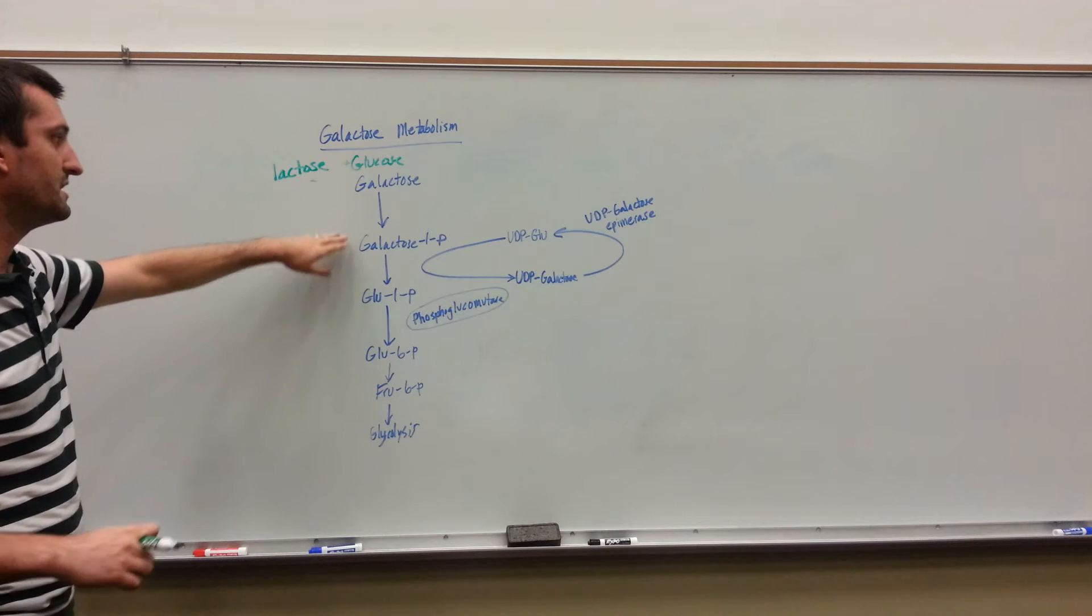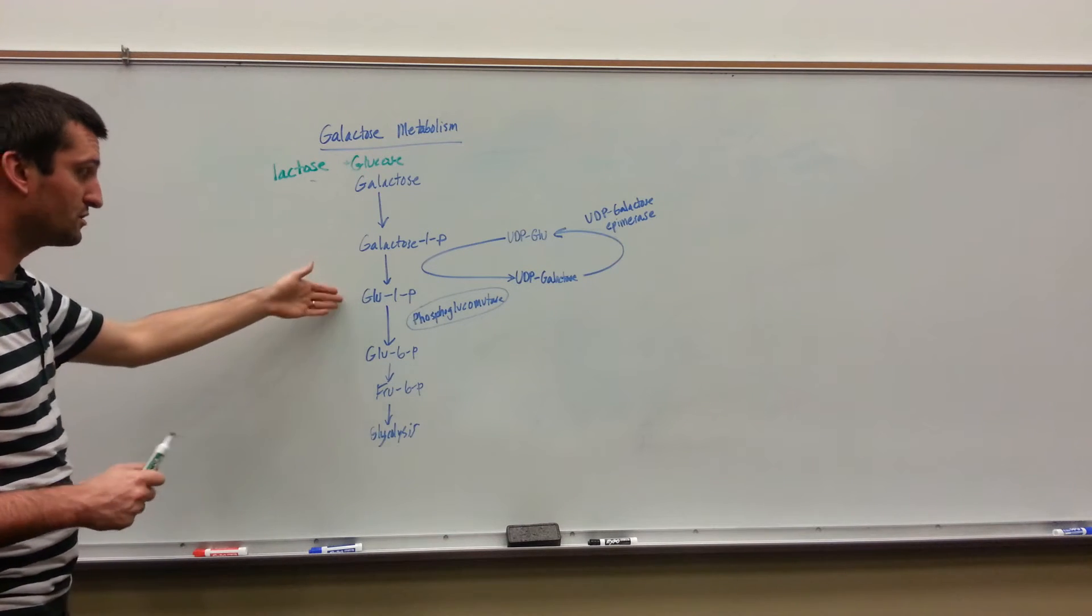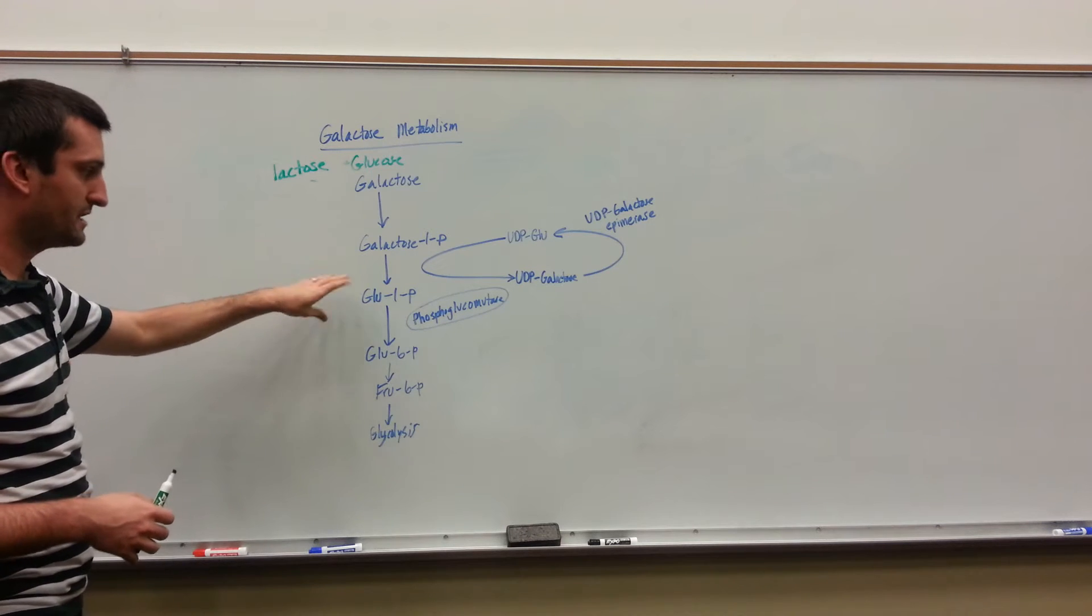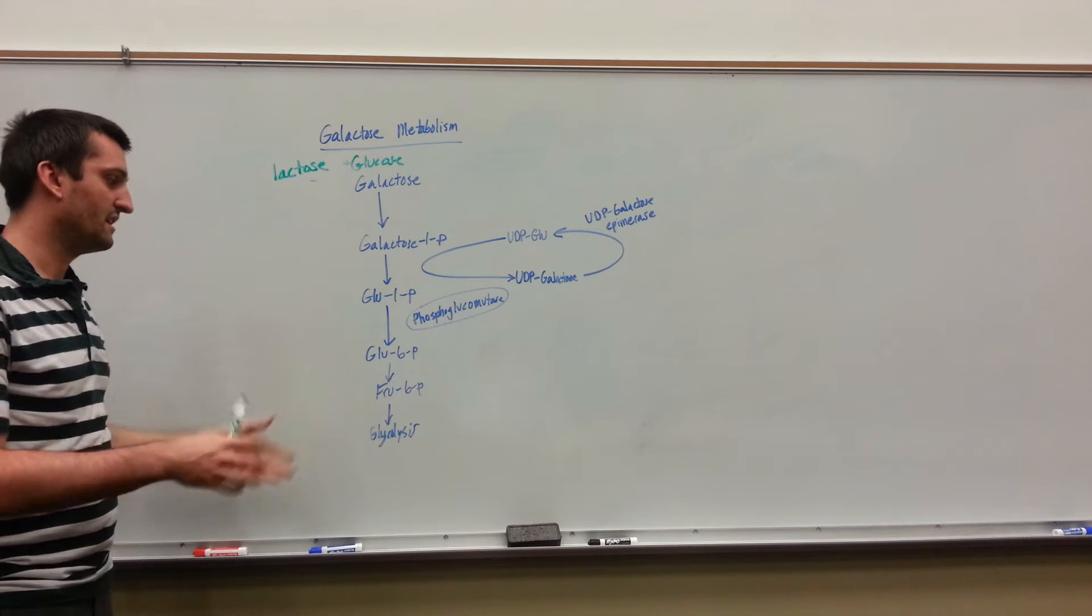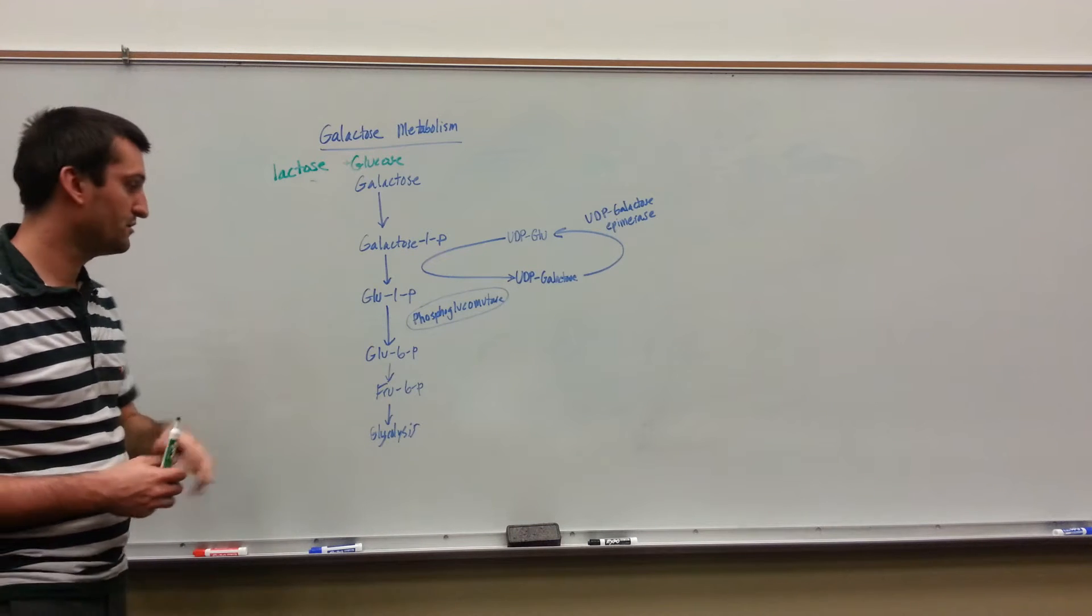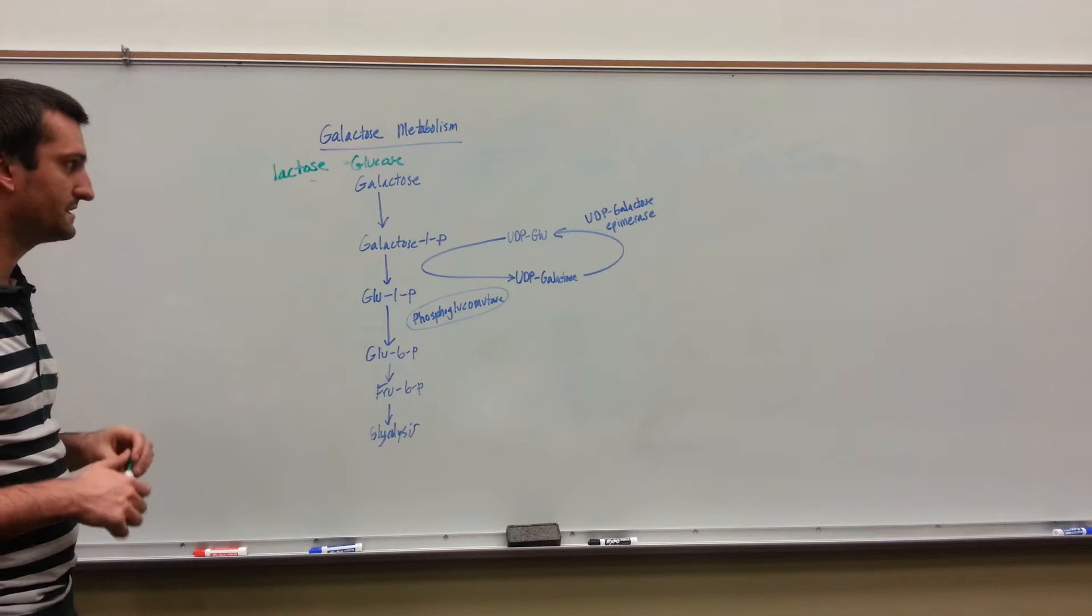It gets first converted, phosphorylated, then that phosphorylated version gets converted to glucose. You rearrange that phosphate to a 6 position instead. That glucose then is in the glycolysis pathway, glucose 6-phosphate. That's going to be your first intermediate step in glycolysis.